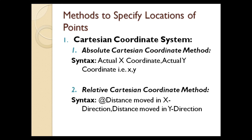The next method is the relative Cartesian coordinate method. The syntax is: at-the-rate, distance moved in x direction, comma, distance moved in y direction — with respect to the previous point. You have to move according to the previous point, in relation to the previous point. That is why it is known as the relative coordinate method.